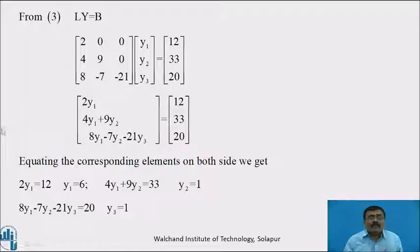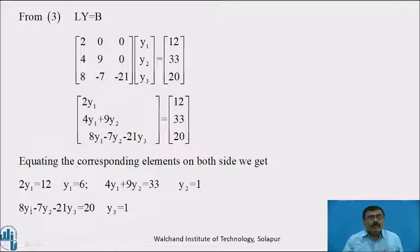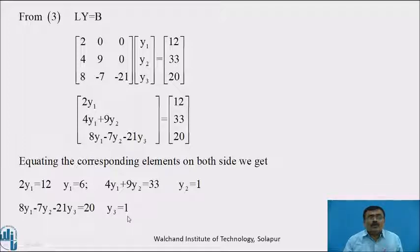Taking the product on the left-hand side: [2Y1, 4Y1 + 9Y2, 8Y1 − 7Y2 − 21Y3] = [12, 33, 20]. Equating corresponding elements: 2Y1 = 12 implies Y1 = 6; 4Y1 + 9Y2 = 33 implies Y2 = 1; 8Y1 − 7Y2 − 21Y3 = 20 implies Y3 = 1.